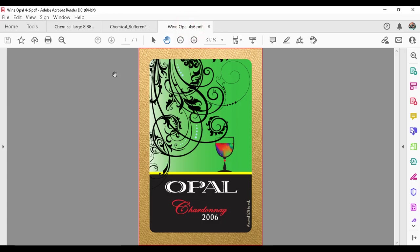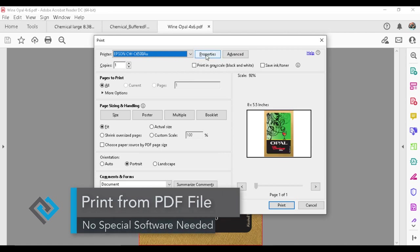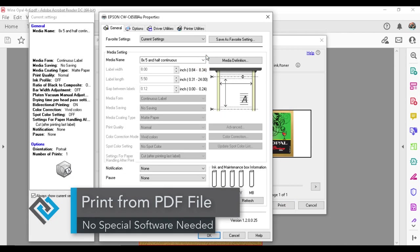Okay, so this is a four by six die cut label. This is a wine label. And within this program, you just print directly from a PDF, nothing fancy. Within the PDF, you're going to be creating your own presets.